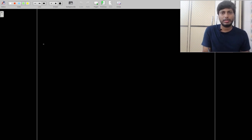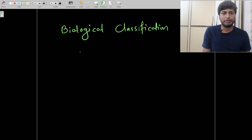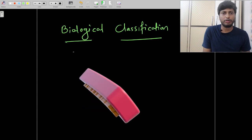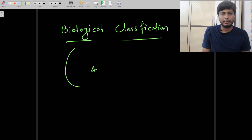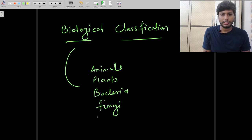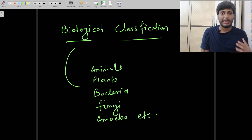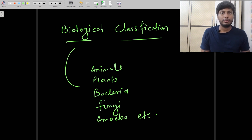When we talk about Biological Classification, there are two words: one is Biological, second is Classification. Biological means it includes different types of organisms which include animals, plants, bacteria, fungi, and protists like Amoeba, Paramecium, etc. When we have to study all these different types of organisms — their characteristics, similarities, differences, their morphological as well as anatomical characters — one thing is very important: we have to classify them into different groups. Until and unless we classify them into different groups, we won't be able to study them properly.